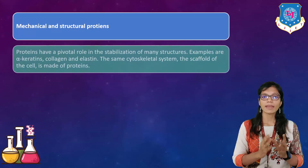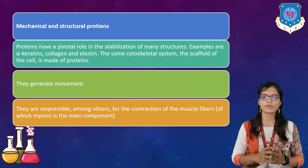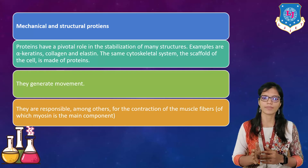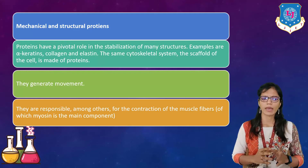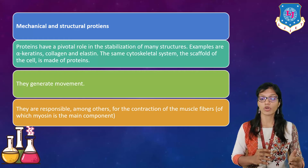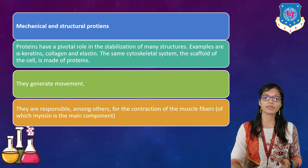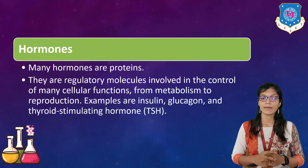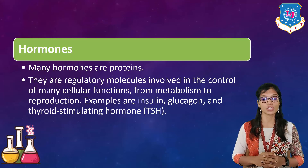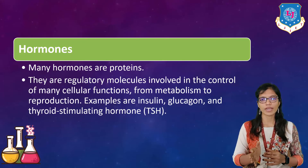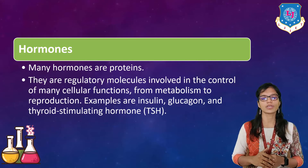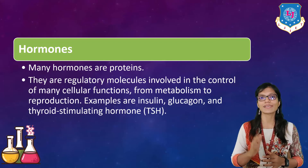Mechanical and structural proteins have a pivotal role in stabilizing many structures. Examples are alpha-keratin, collagen, and elastin. The cytoskeletal system — the scaffold of the cell — is made up of proteins, responsible among others for movement and the contraction of muscle fibers, of which myosin is the main component. Hormones: many hormones are proteins and regulatory molecules involved in control of cellular functions from metabolism to reproduction, for example insulin, glucagon, and thyroid-stimulating hormone (TSH).